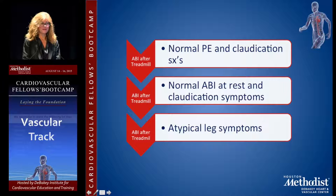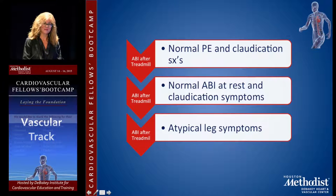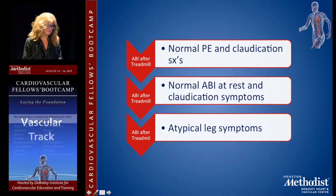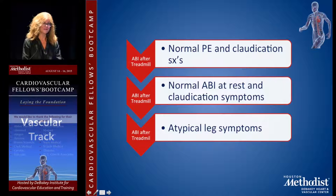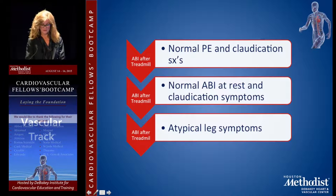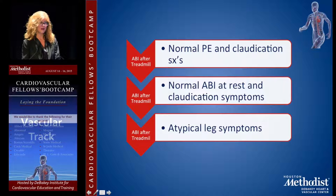ABI correlates with walking distance, velocity, balance, and overall physical activity. Post-treadmill ABI is used for patients who present with claudication symptoms but have a normal ABI at rest. You elicit their symptoms by having them exercise — measure the ABI before and after exercise — essentially unmasking their symptoms.